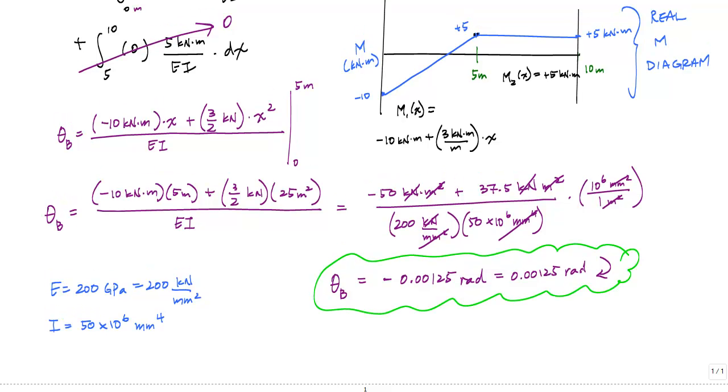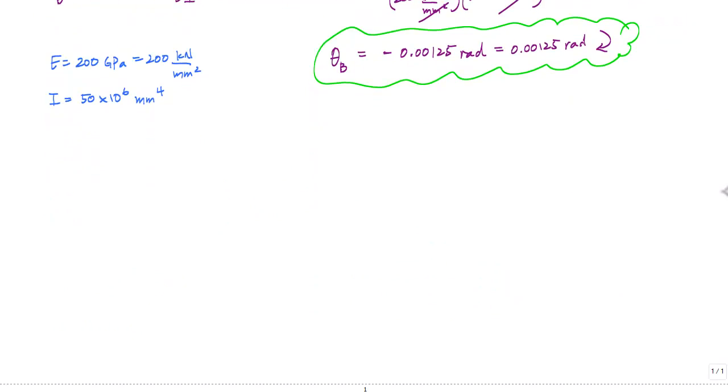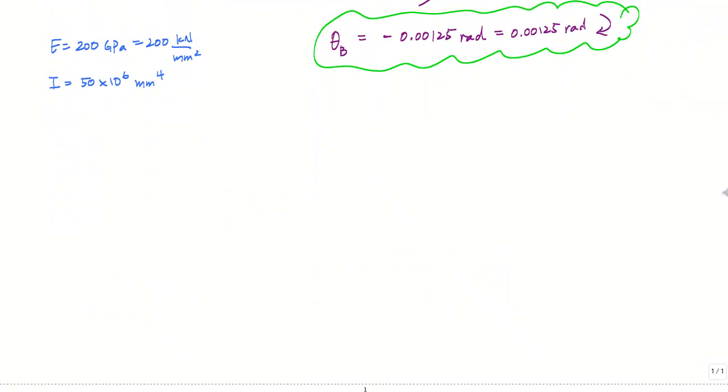So now let's move on and calculate the deflection at point C, which was at the tip of the cantilever. The process here, essentially we're repeating steps 3, 4, and 5, which is applying that external virtual unit load, drawing the shear moment diagrams, and then applying the principle of virtual work and integrating. I'm going to move at a little bit faster pace now because hopefully you have a sense of how things work.